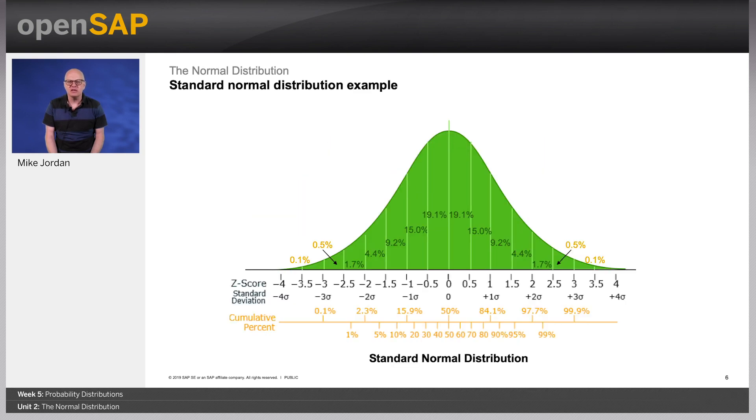Here is an example using the standard normal distribution. In a recent data science test, you did really well and scored 1.5 standard deviations above the average. How many students scored lower than you? From the graph, you can see that between 0 and 1.5 standard deviations, the percentage population is 19.1, plus 15, plus 9.2, which equals 43.3%. Less than 0 is 50%, the left half of the curve. Therefore, in theory, the total less than yours is 50% plus 43.3, which is 93.3%. That's a very good result.